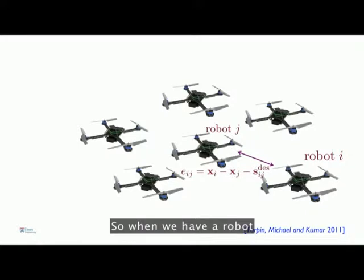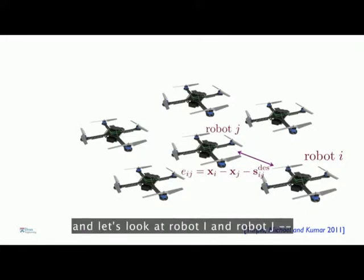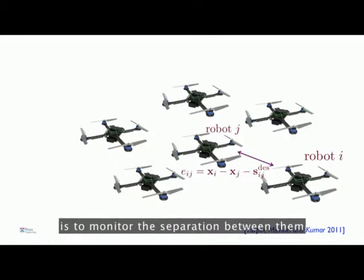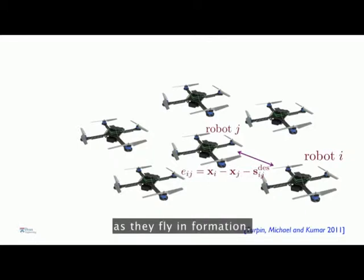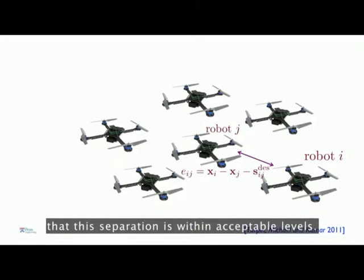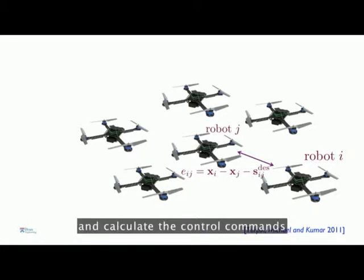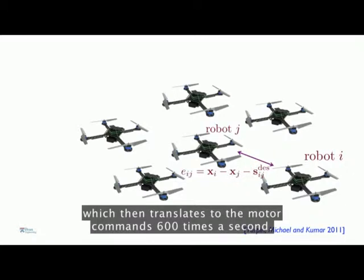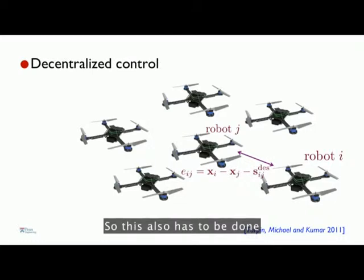When we have a robot surrounded by neighbors — let's look at robot I and robot J — what we want the robots to do is to monitor the separation between them as they fly in formation, and make sure that this separation is within acceptable levels. The robots monitor this error and calculate control commands a hundred times a second, which then translates into motor commands 600 times a second.